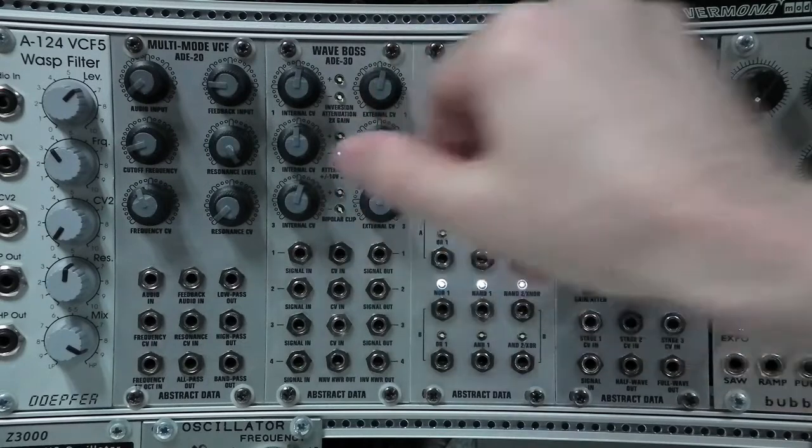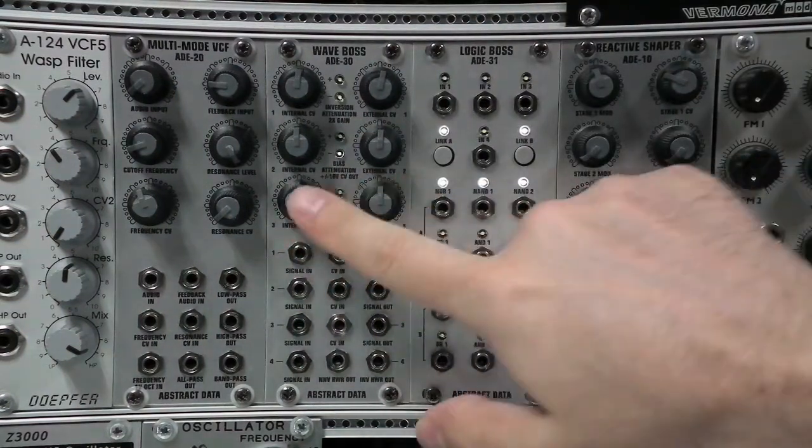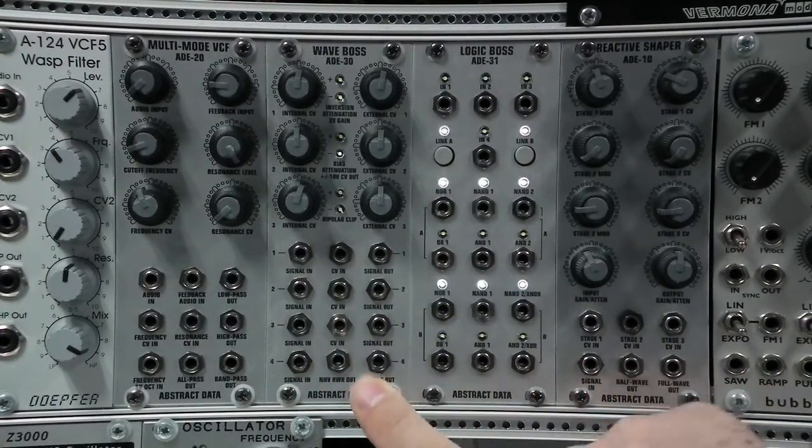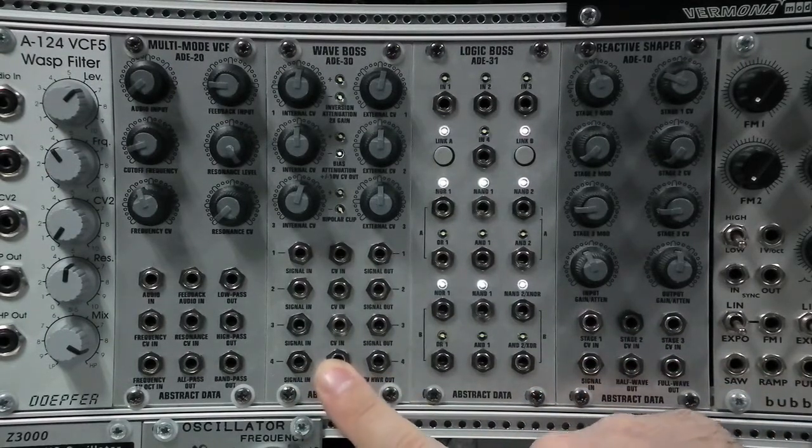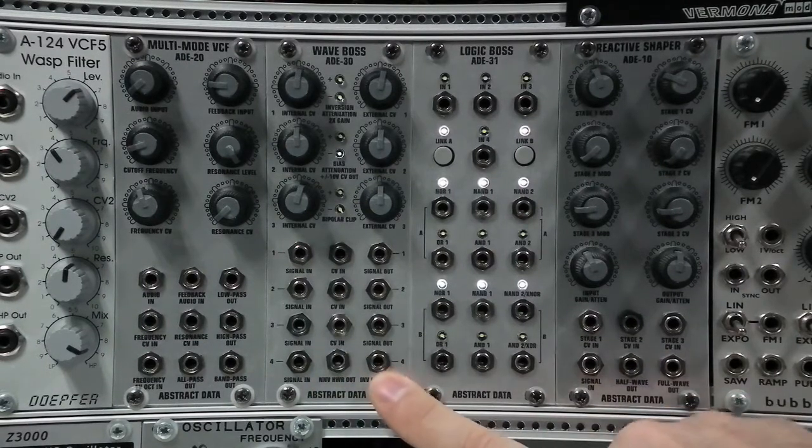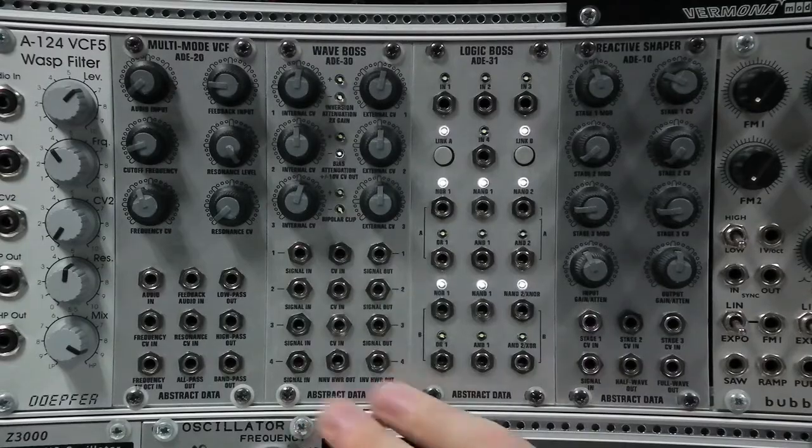Stage three gives you bipolar clipping and finally stage four gives half wave rectification outputting the non-inverted positive going half of the waveform and the inverted negative going half of the waveform. Let's check out some patches using each stage and we'll also look at some scope shots so you can see what's going on.